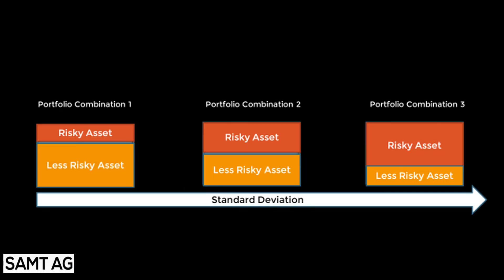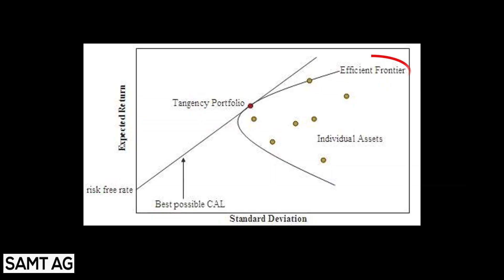By selecting different asset combinations, you can achieve every risk-to-return combination in a portfolio. And this brings us to the efficient frontier, which is a graphical representation of different combinations of assets to achieve an optimal level of return at any given level of risk.